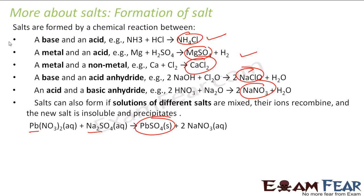So, salt can be formed using so many ways: base and acid, metal and acid, metal and non-metal, base and acid anhydride, acid and base anhydride — all give different salts.